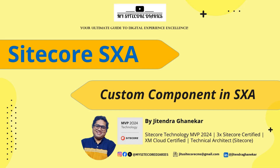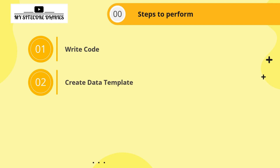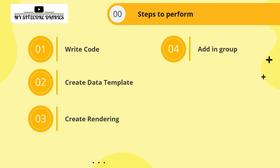Today we are going to talk about how to add a custom component in SXA. At a high level, the steps are: first, write the code for your custom component; second, create a data template; third, create a rendering; fourth, add it to a specific component group; and then it will be ready to use on your page.